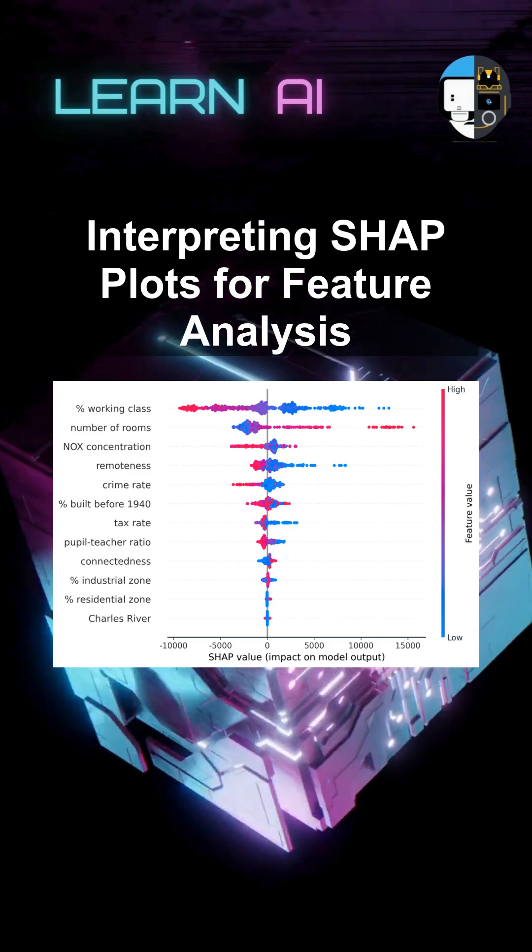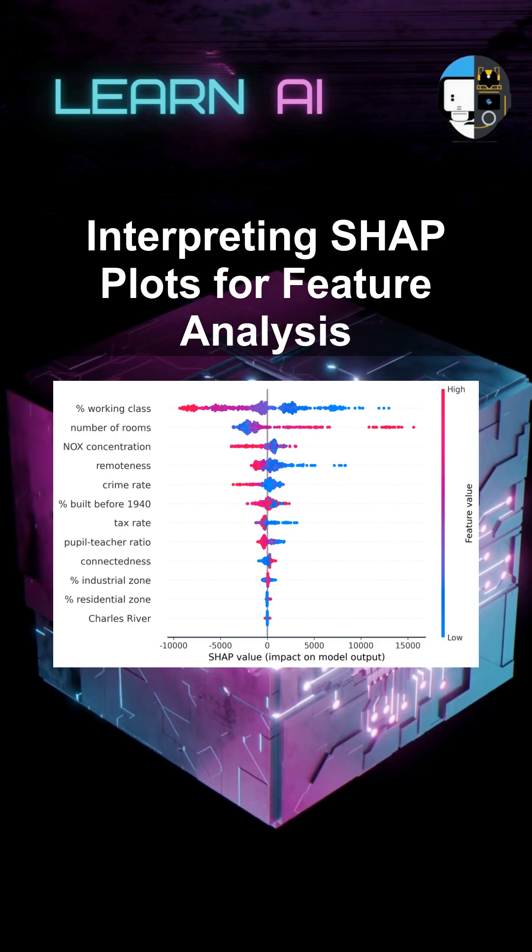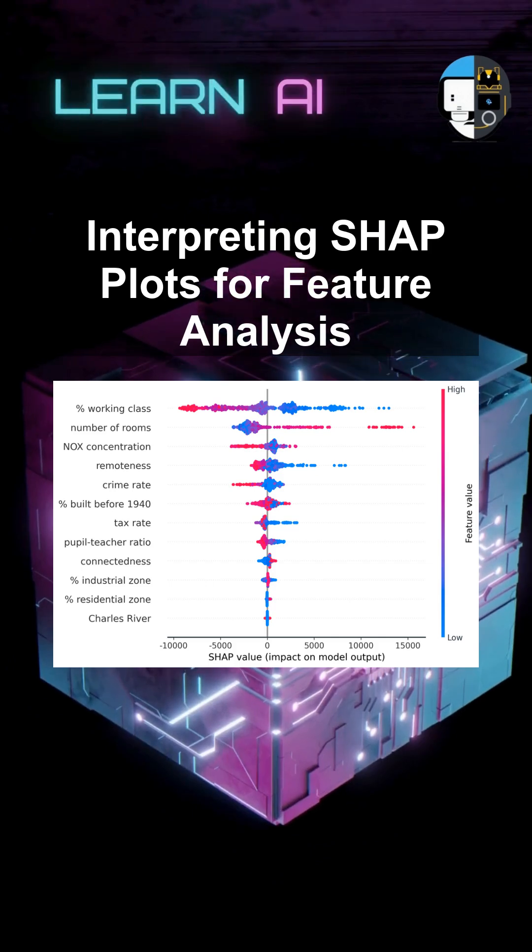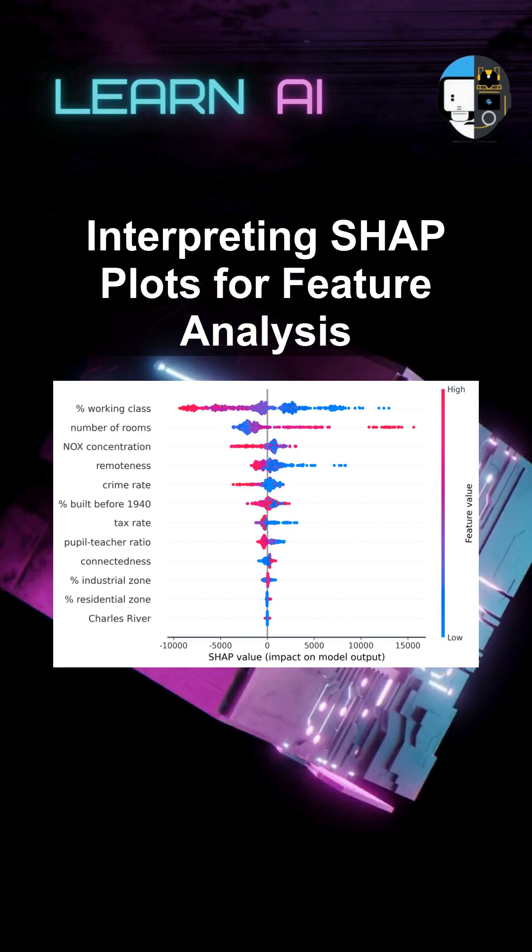each dot represents a SHAP value for a feature at a specific instance, with color indicating the feature value. The position along the x-axis shows the impact on the model's output. A well-spread summary plot signifies diverse feature contributions, whereas clusters indicate specific patterns.